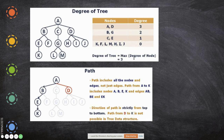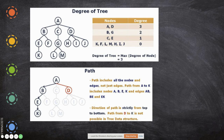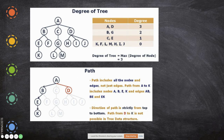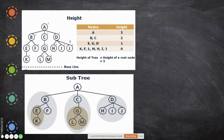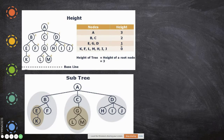Path includes all nodes and edges. Path from A to K includes A to B, B to E, E to K including the traversed edges. The direction of a path is strictly from top to bottom — always from parent to children, never from children to parent. Height of this tree is three because there are levels zero, one, two, three. B and C are at height two, and their children are at height one, leaf nodes at height zero.